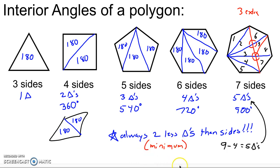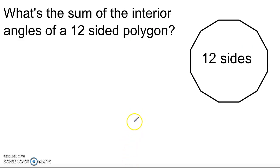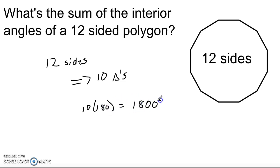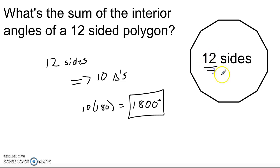This is important because if I had a 12-sided polygon — a classic test question — what's the sum of the interior angles of a 12-sided polygon? You could connect all those lines and count, but there's no need. If there are 12 sides, there are 10 triangles, which means 10 times 180, or 1800 degrees, is the sum of the interior angles. The sum is always the number of triangles times 180, and the number of triangles is always two less than the number of sides.